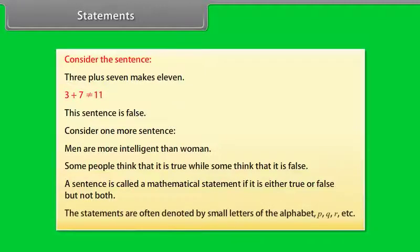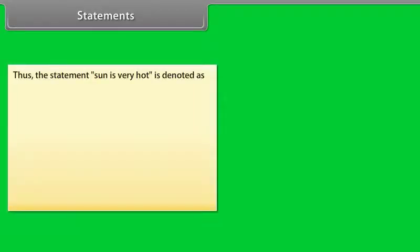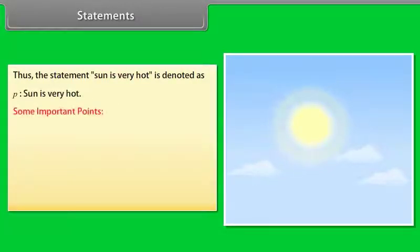The statements are often denoted by small letters of the alphabet: P, Q, R, etc. Thus, the statement 'sun is very hot' is denoted as: P: sun is very hot.